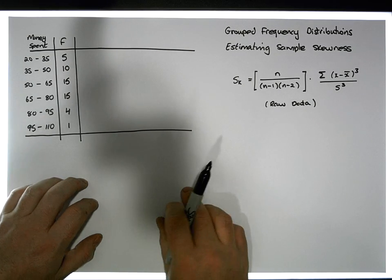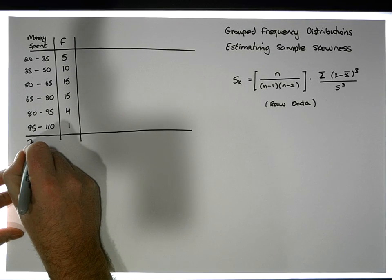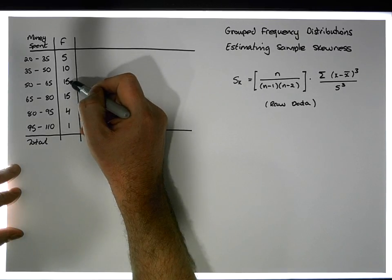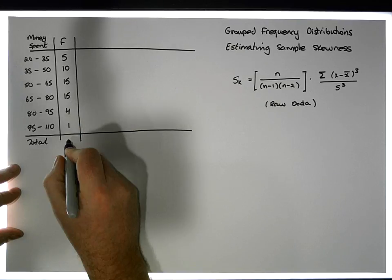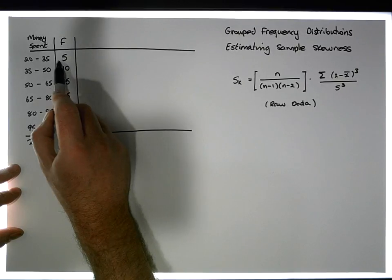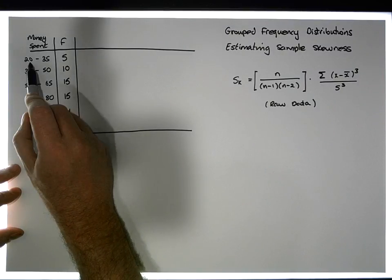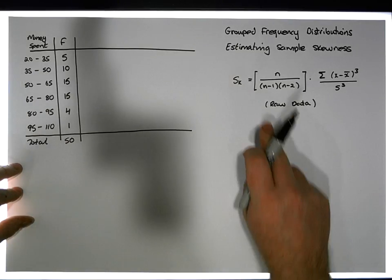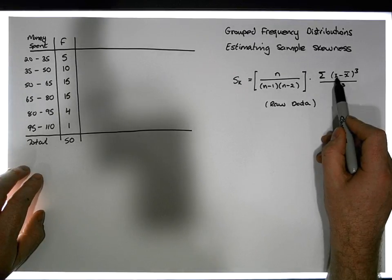When our data is represented through a frequency distribution, our total sample size here is 5 + 10 + 15 + 15 + 4 + 1 = 50. But we no longer have the individual x values. All we know is that five observations fall between 20 and 35 — a frequency of five. So we need to modify the formula.